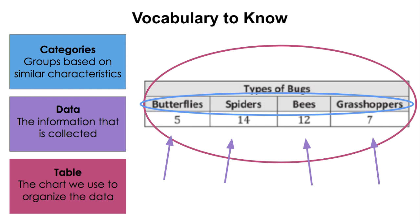Just like yesterday though, you will need the same vocabulary for categories, groups based on similar characteristics. The data, the numbers, the information that is collected. And then the table, that way of organizing that chart that's used to kind of hold all of the data that we find. So you should remember that from yesterday, so I'm going to move right along.